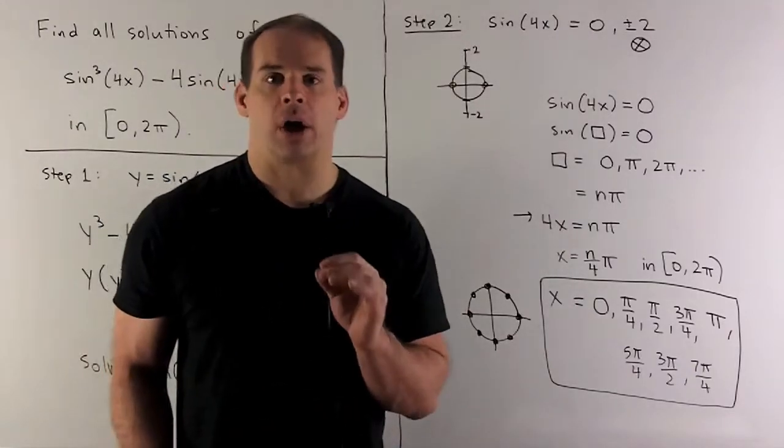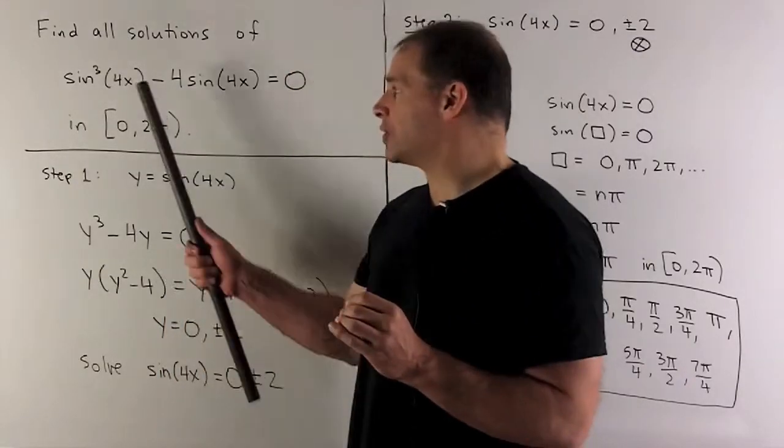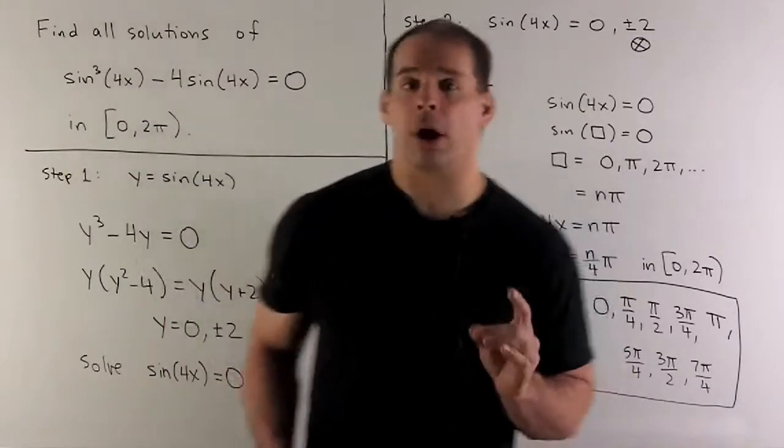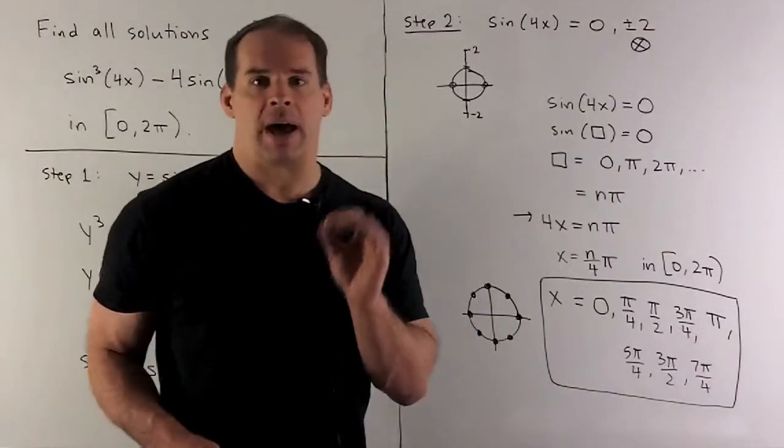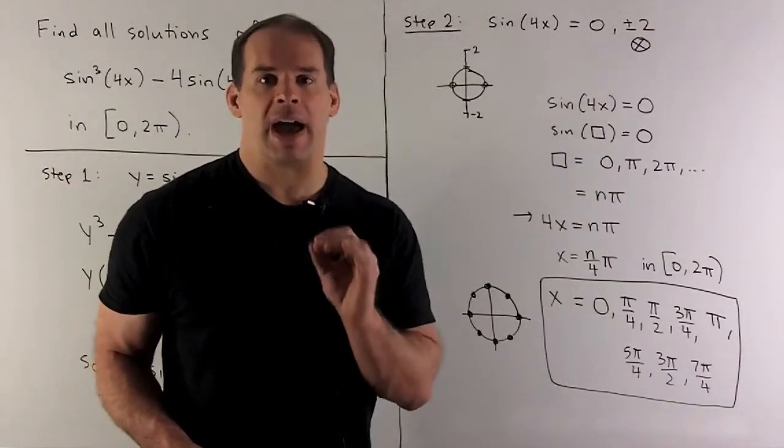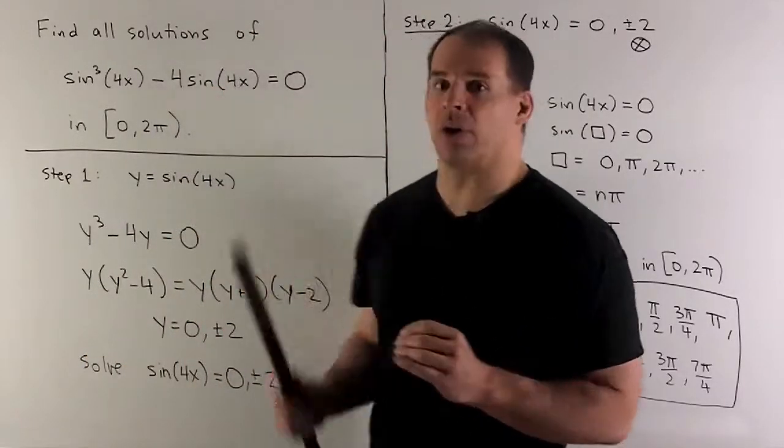Of course, we check our work. We're going to put it back in the original equation. First thing we do is multiply by 4. So if I multiply any of these by 4, I get a multiple of π. Sine of a multiple of π is 0. So what comes out is going to be 0 - 0 gives me 0.